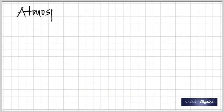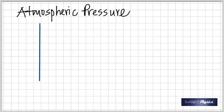Atmospheric pressure is always present, but we don't feel it. If it suddenly vanished, we'd explode. The reason we don't feel it is that our cells exert an equal pressure outward, balancing it. We do not feel the enormous atmospheric pressure because of this equilibrium.